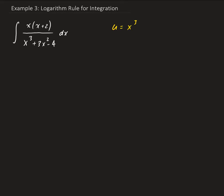So we have u equal to x cubed plus 3x squared minus 4. When we go ahead and take the derivative of u with respect to x, we're going to get 3x squared plus 6x.